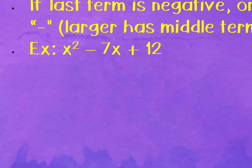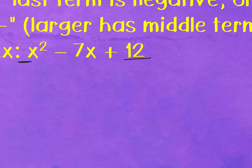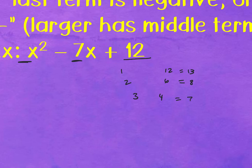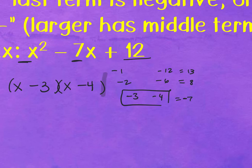For x² − 7x + 12: there's nothing on the front, so we go to positive 12. Factors of 12 are 1 & 12 (sum 13), 2 & 6 (sum 8), and 3 & 4 (sum 7). We need a sum of negative 7, so both must be negative: −3 and −4. That gives a product of positive 12 and a sum of −7. The factored form is (x − 3)(x − 4).